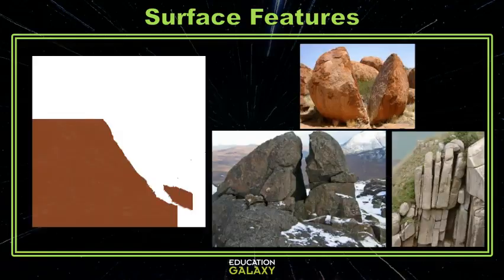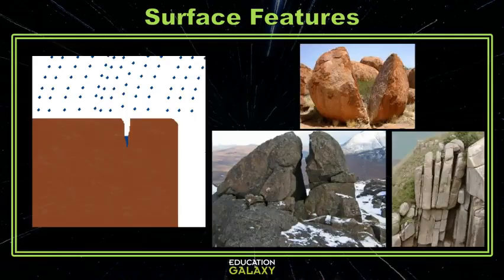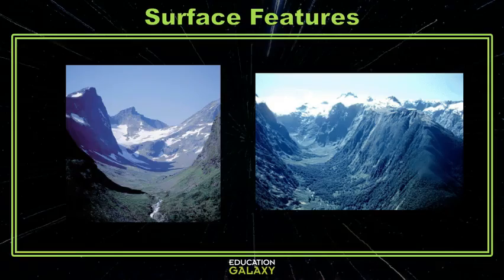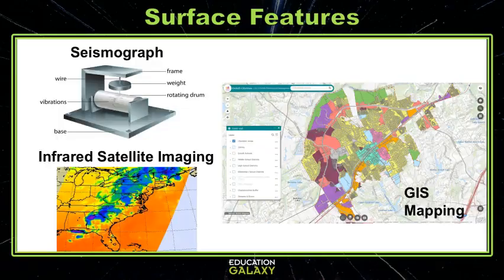Ice does this cool thing called wedging — water seeps into the cracks of rocks and then when it freezes it breaks the rock. You can also see great valleys created by massive land glaciers.